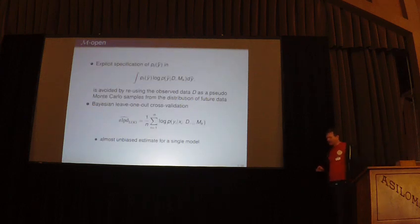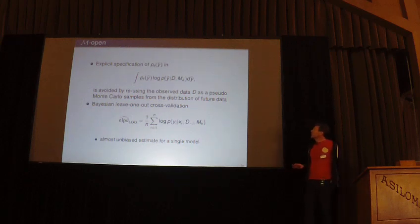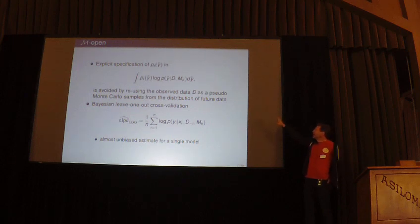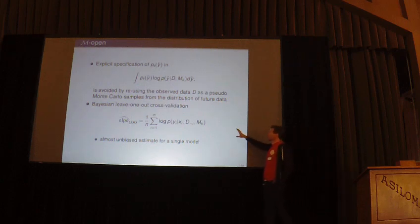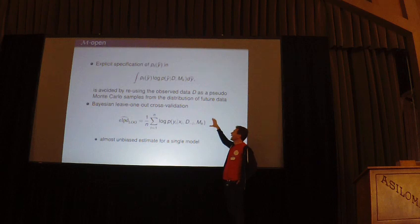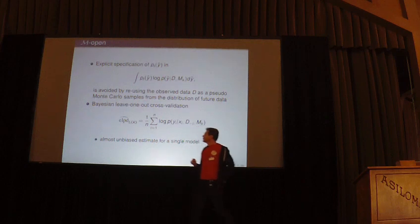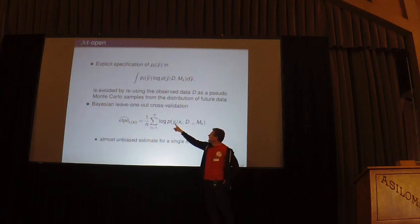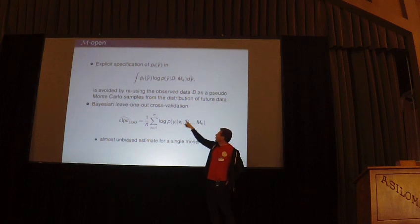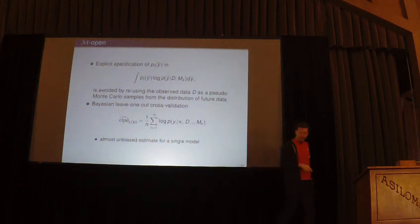In M-open we avoid explicit specification of p-tilde by reusing observed data as pseudo-Monte Carlo samples from the future data distribution. One example is Bayesian leave-one-out cross-validation: we plug in already-observed xi and yi into the predictive density and average over all of them, but to avoid using observations twice, when we condition on yi and xi we remove them from the data when fitting the posterior distribution.